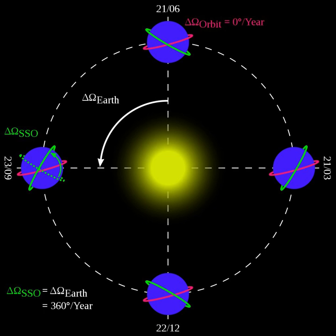More technically, it is an orbit arranged so that it precesses through one complete revolution each year, so it always maintains the same relationship with the sun.